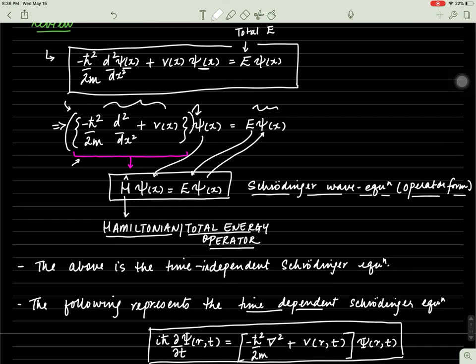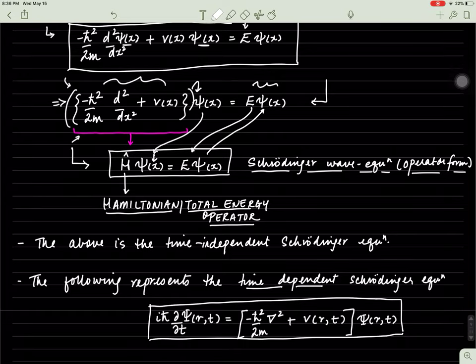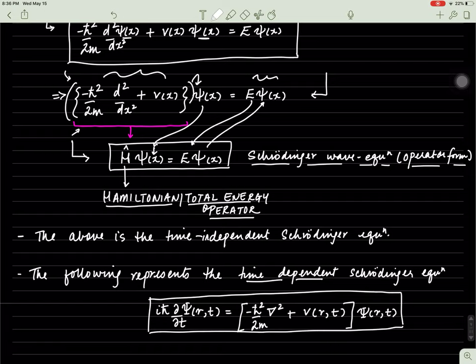As you can see, this equation only depends on distance or position x. This is the time-independent Schrödinger wave equation in its operator form.